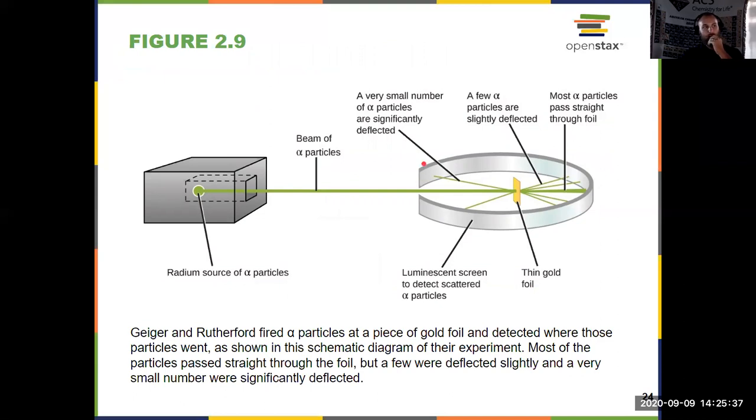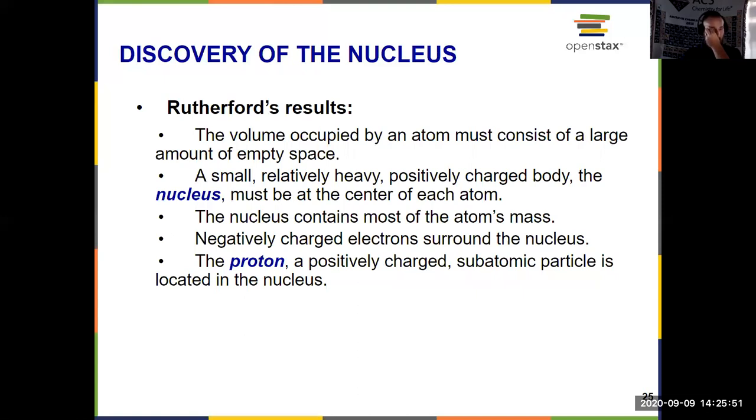And this was significant because the scope of this experiment is like shooting cannonballs at a volleyball net. The fact that some of them are scattering back was a big discovery. And that gave us both the nucleus and the positive charge gave us the idea of the proton. Because most of them were going through undisturbed, Rutherford figured out that most of the volume of atoms is actually empty space. But in the middle is a small, relatively heavy, positively charged body.